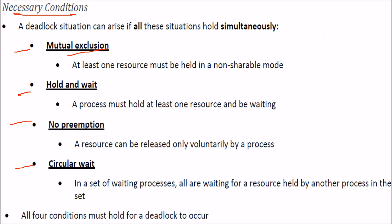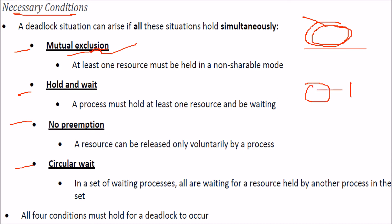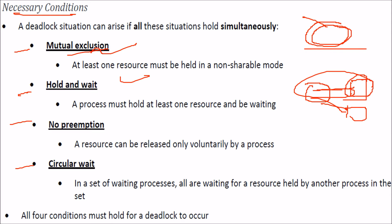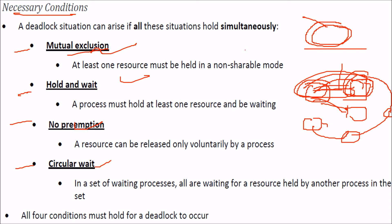The first condition is mutual exclusion: at least one resource is held in non-shareable mode. Second is hold and wait: a process is holding a resource and waiting for another resource. Third is no preemption: once a process is holding a resource, it will not voluntarily release it — it has to be preempted, but there is no preemption. Fourth is circular wait: this process is waiting for that process, that process is waiting for another, forming a set of waiting processes where each is waiting for a resource held by another in the set. All four conditions must hold simultaneously for a deadlock to occur.